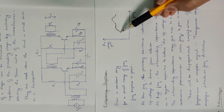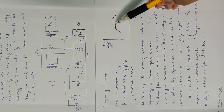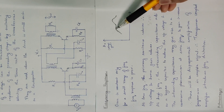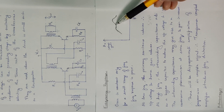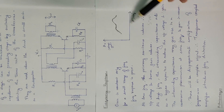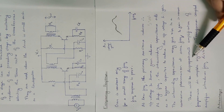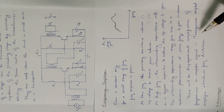At low frequency, primary reactance reduces gain. At high frequency, interwinding capacitance reduces gain. At a certain frequency, resonance between inductance and capacitance causes a sudden gain increase. This results in disproportionate amplification among frequencies in the complete signal.